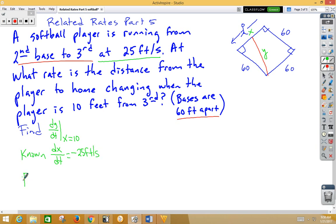Now, we're going to need a formula. And because we have a right triangle, we can go ahead and use the Pythagorean theorem. So we have x squared plus 60 squared is equal to y squared.